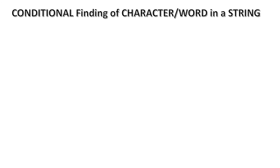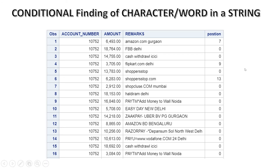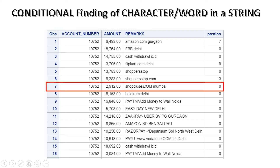Next we're going to do conditional finding of characters or words in a string — similar to what we did before, but this time using certain conditions. If you look at the previous example where we got the positions of '.com' in the given string, there's probably one entry you didn't notice. We were trying to look for '.com' and wherever the string contains it, it should return a value greater than zero.